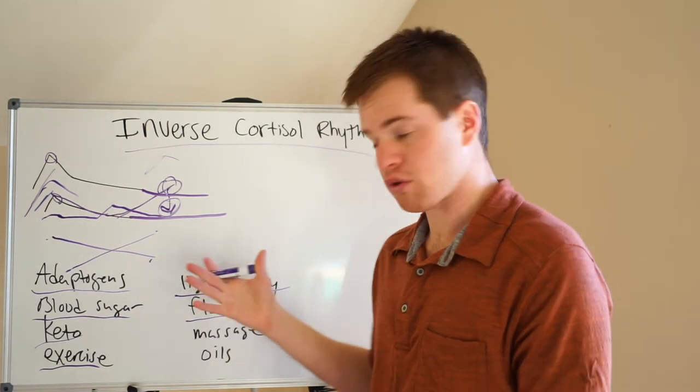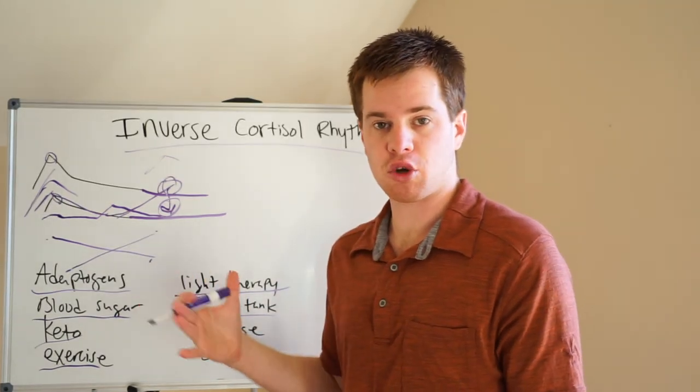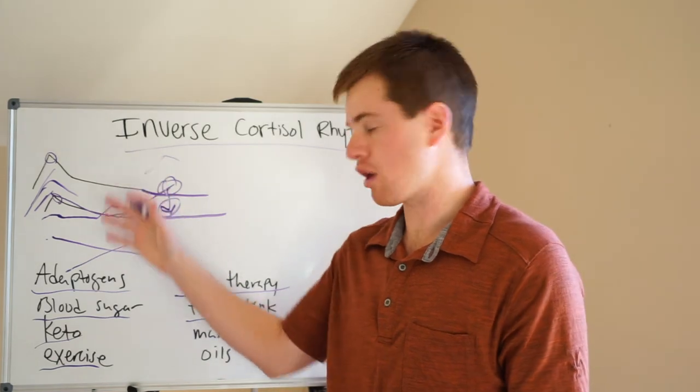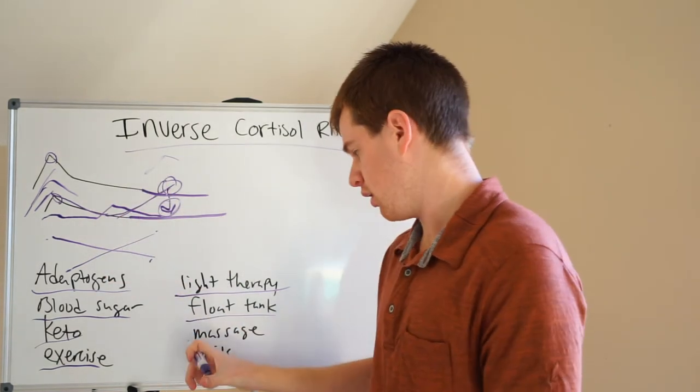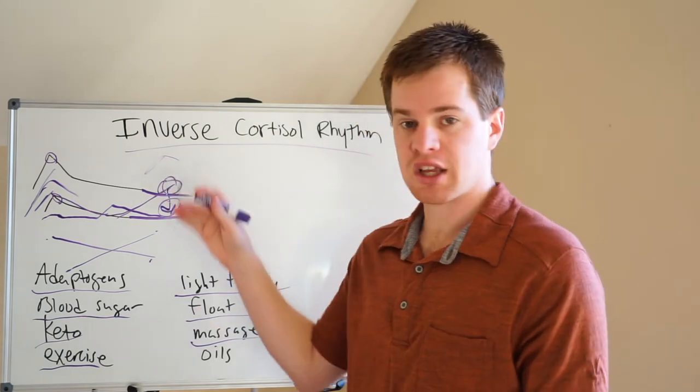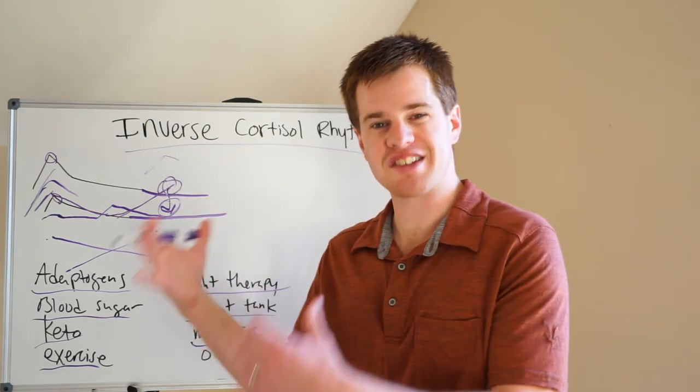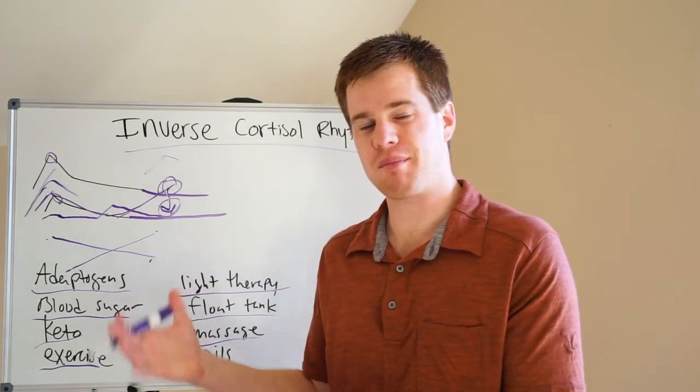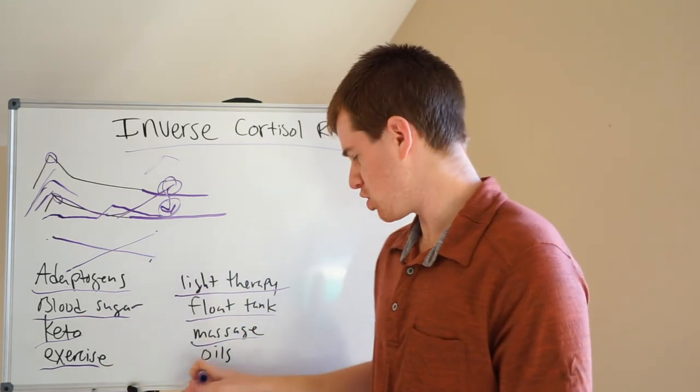Float tanks. Those are great. They can help modulate cortisol. It's called rest therapy in the literature. It can be really great at modifying cortisol rhythm and dropping cortisol into a normal pattern. Massage. Anything that's going to engage that parasympathetic mode, that rest and digest mode that a lot of us are deficient in. We're go, go, go all the time. Massage, float tanks.